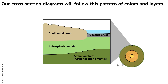All cross-section diagrams follow this pattern of colors and layers. Continental crust is in the tan color, oceanic crust is in medium gray, lithospheric mantle — the part of the lithosphere that is compositionally mantle — is in lighter green, and the asthenosphere, also called the asthenospheric mantle, is in the darker green color.